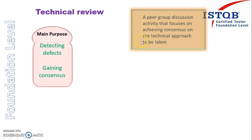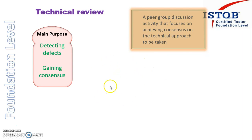The main purpose of technical review is detecting defects — as was the case in the last two topics — but here the new addition is gaining consensus, because people are gathering together to decide what type of technical approach they will follow. Everyone should be on the same platform after the meeting, agreeing on the technical technique to be used in order to implement the test cases.